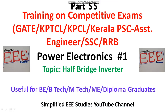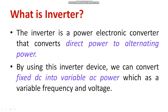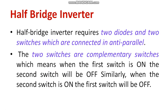Welcome to Simplified Triple Studies. In this video, I will be discussing important concepts based on the single phase half bridge inverter connected to R load. An inverter is a power electronic converter that converts direct power to alternating power. In case of an inverter, it converts fixed DC into variable AC.